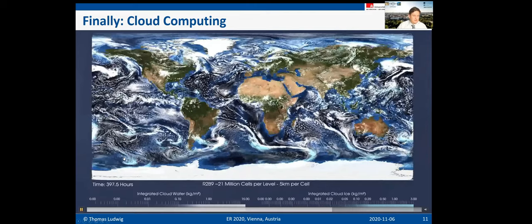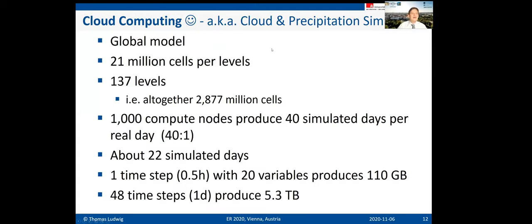This is really a cloud and precipitation simulation on a global model for the whole Earth. We have 21 million cells per level and 136 levels in the vertical direction, giving almost 2.8 billion cells in this simulation. Compare that to the first climate simulation with roughly 280 cells — that is 10 million times more cells. We use 1,000 compute nodes of our parallel computer to produce 40 simulated days per real day.